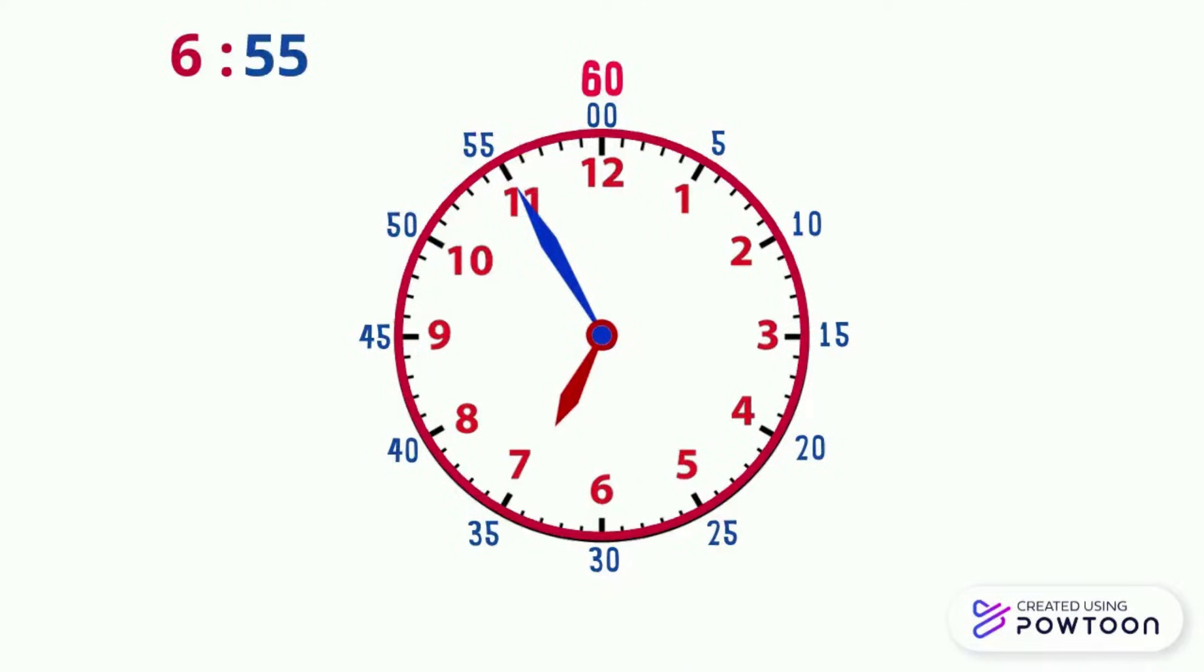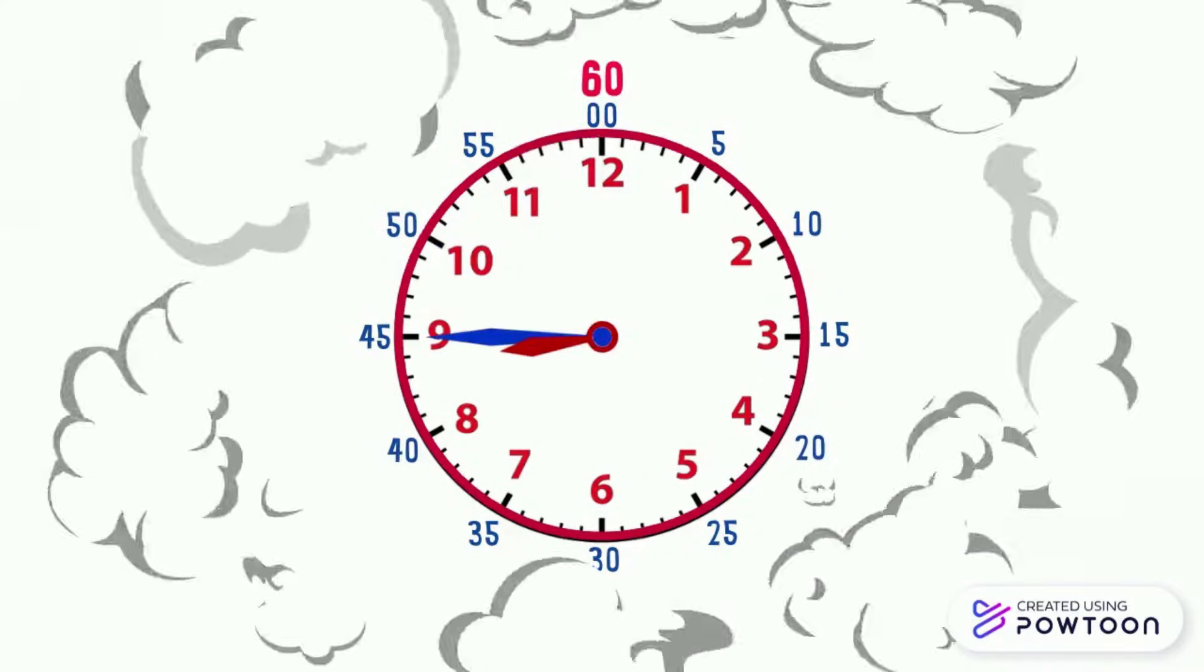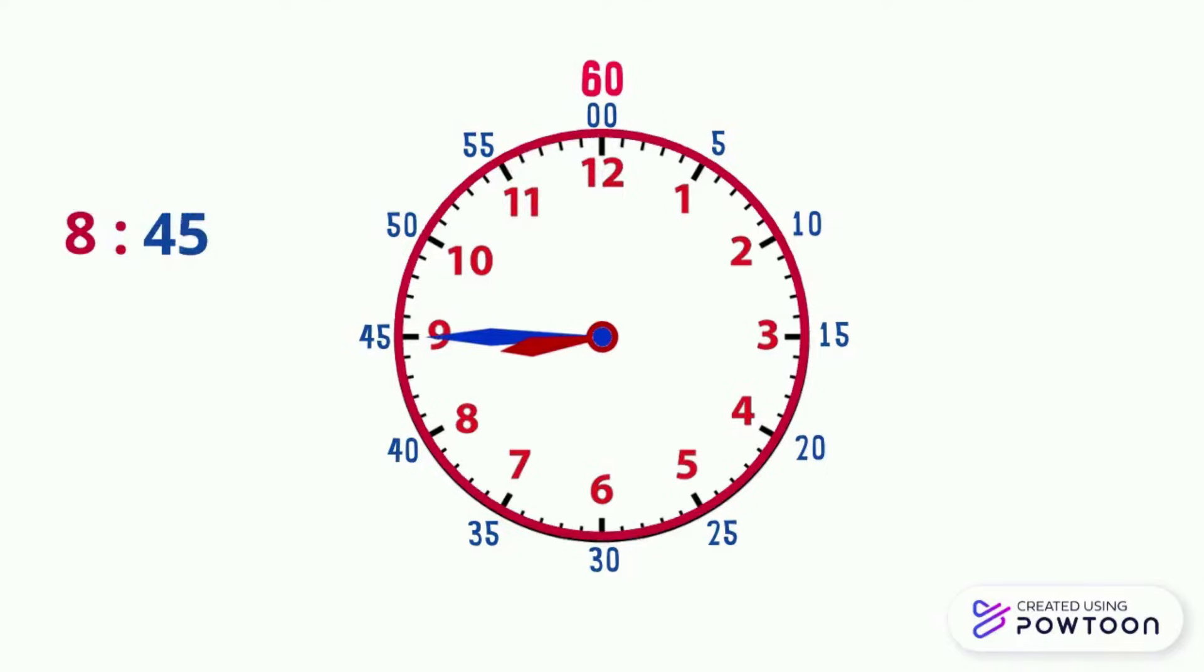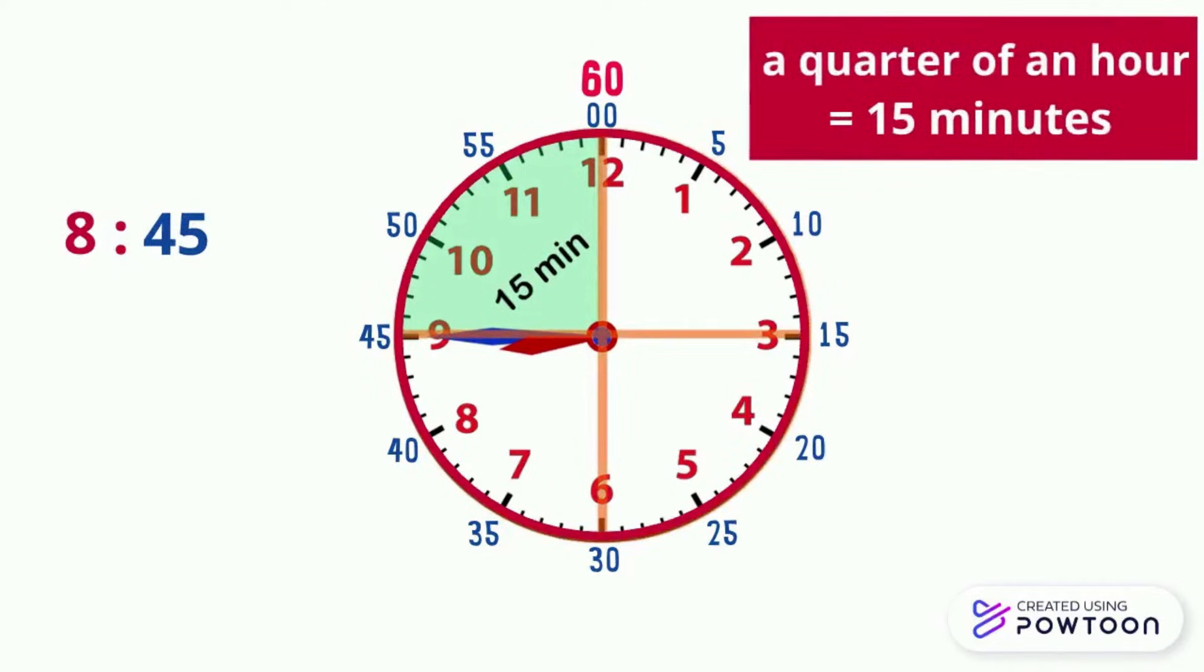Another example: here it is 6:55, and there are 5 minutes left to be 7 o'clock, so it's 5 minutes to 7, or 5 to 7. Here it is 8:45, and there are 15 minutes left to be 9 o'clock. Since there are only a quarter of an hour to reach the next whole hour, here it is quarter to 9.